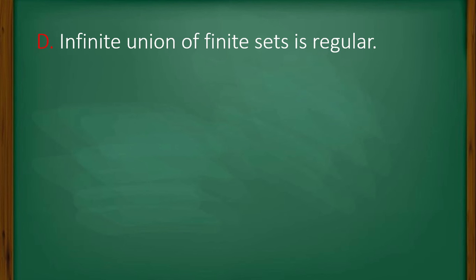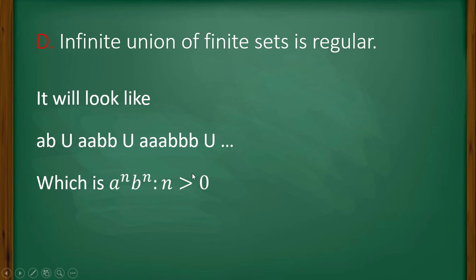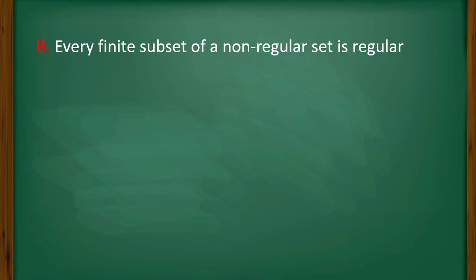Option D: infinite union of finite sets is regular. For example, consider the union of {ab}, {aabb}, {aaabbb}, and so on — each set contains only one string. The infinite union of all these finite sets gives a^n b^n, which we know is not a regular language. So option D is also false.